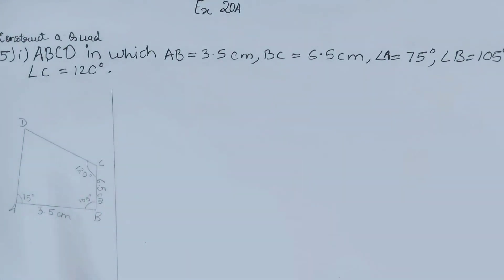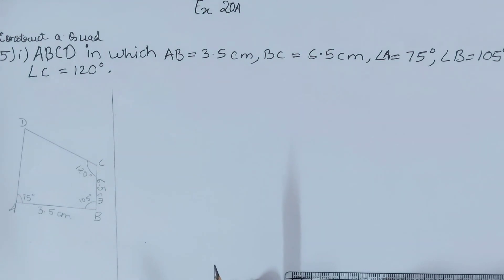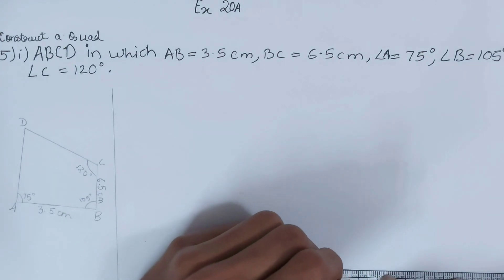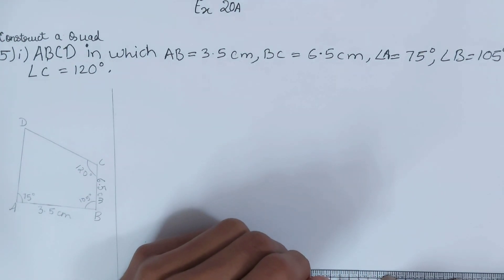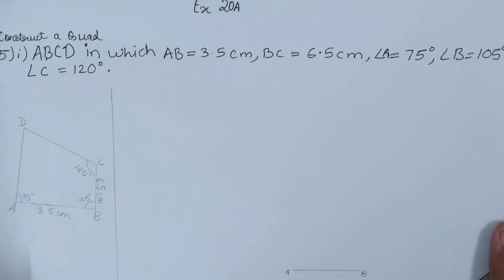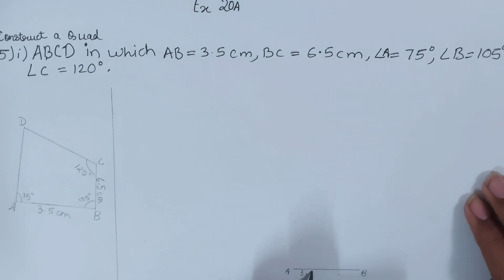First of all, we are going to draw AB. With the ruler we will draw AB, which is going to be 3.5 cm. This is my point A and this is my point B. We have made AB of 3.5 centimeters.